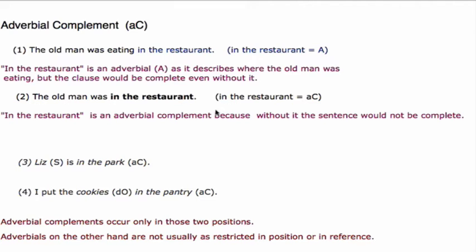Adverbial complements occur only in these two positions: directly after the predicator, as in number three, and in number four, directly after the object complement. Adverbials, on the other hand, are not usually as restricted in position or in reference.